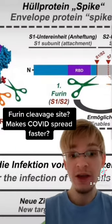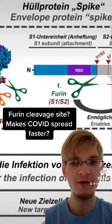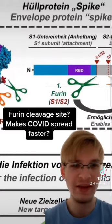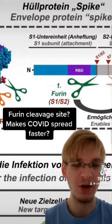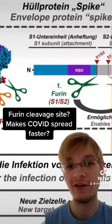Now, there is research that supports the fact that the presence of the polybasic motif at the S1/S2 furin cleavage site can actually increase the virulence of the virus. It serves as a virulence factor that will actually help the SARS-CoV-2 virus spread.